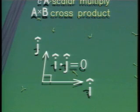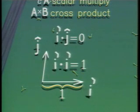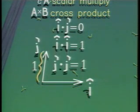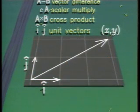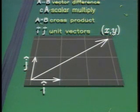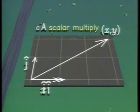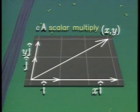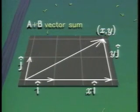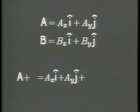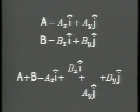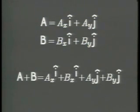Vector algebra makes use of two perpendicular unit vectors, i and j. The little hat over the vector means that it has length one. The vector from the origin to the point with coordinates x, y is the sum of two perpendicular vectors: a horizontal vector x·i and a vertical vector y·j. With the help of i and j, adding and multiplying vectors can be accomplished by ordinary algebra.